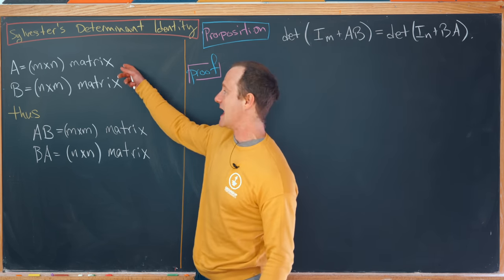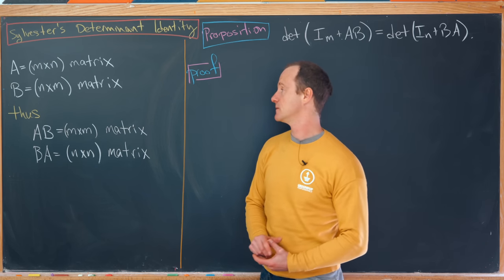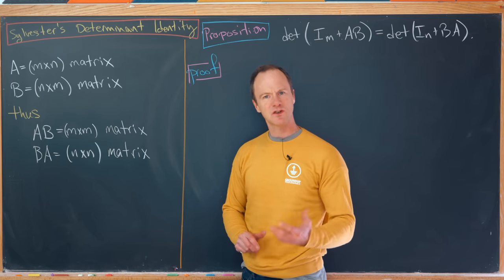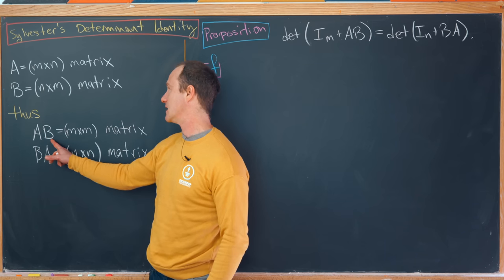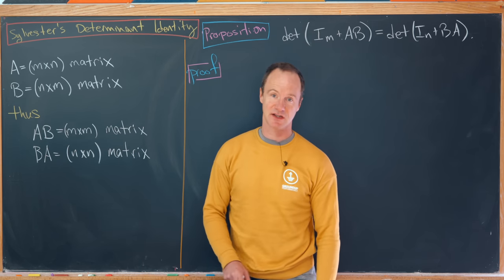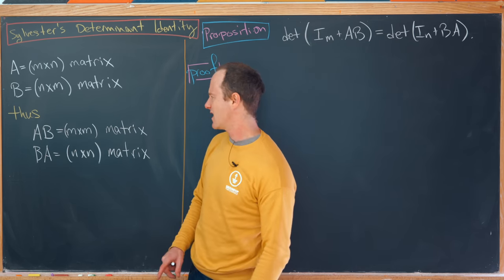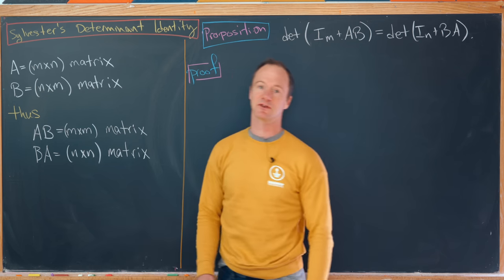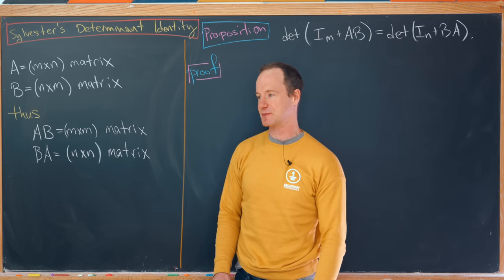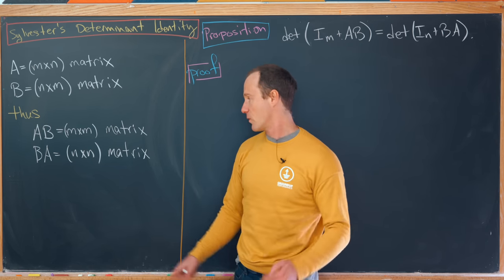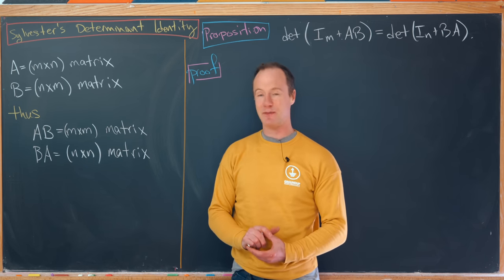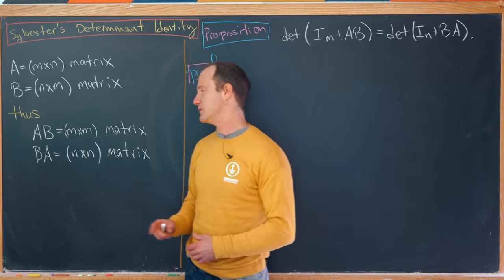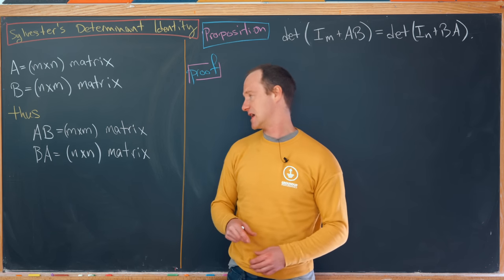Let's suppose that A is an M by N matrix, and that B is an N by M matrix. Notice that the product A times B is an M by M matrix, because you get the size by these outside numbers, as long as the inside numbers match. Then you're allowed to do the multiplication in the first place. Furthermore, B times A is an N by N matrix. So unless M and N are the same, A times B and B times A are different sized square matrices.